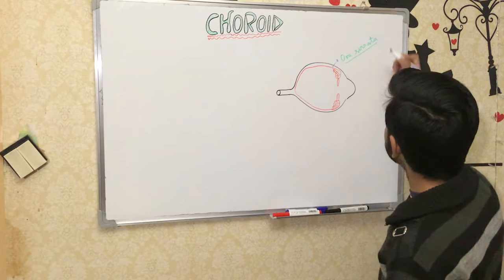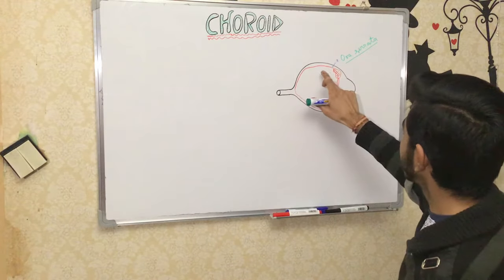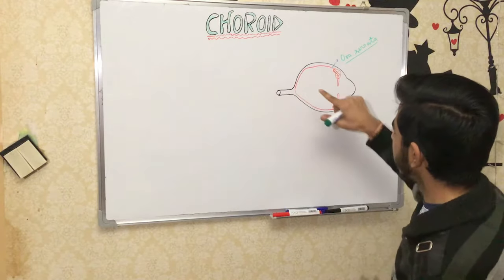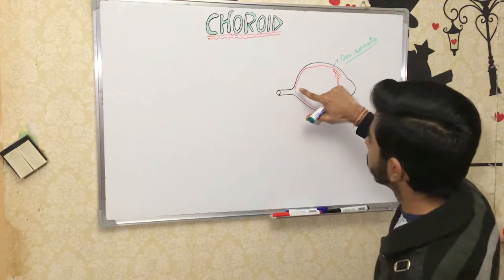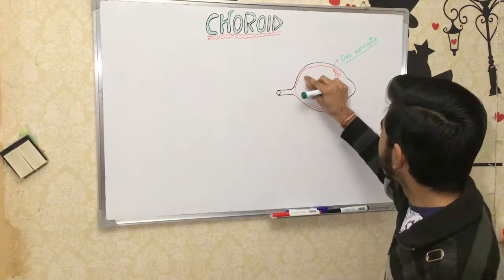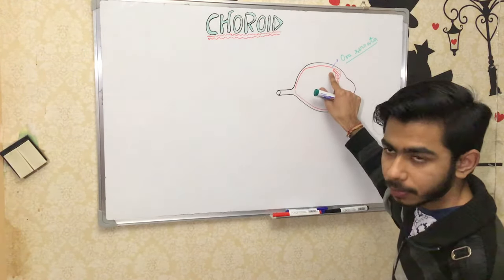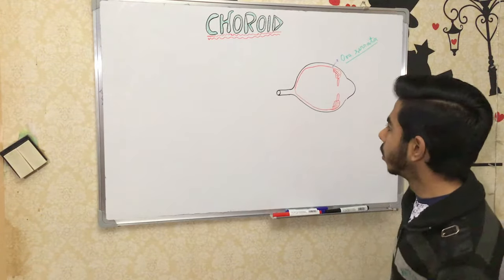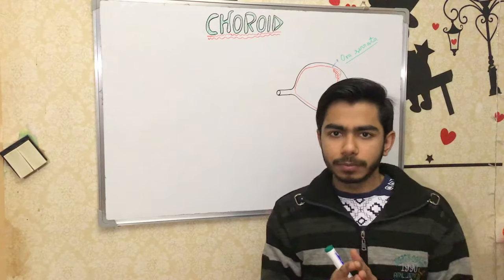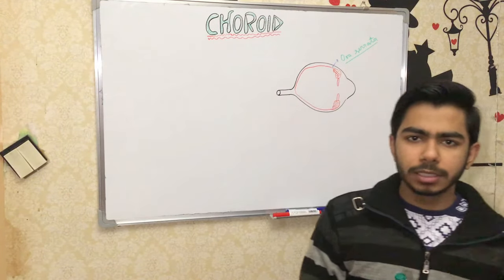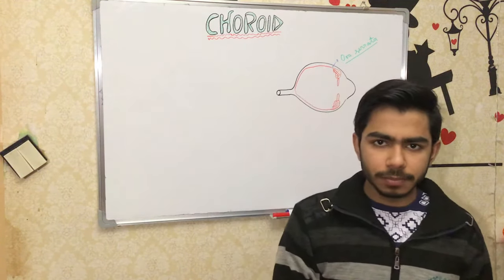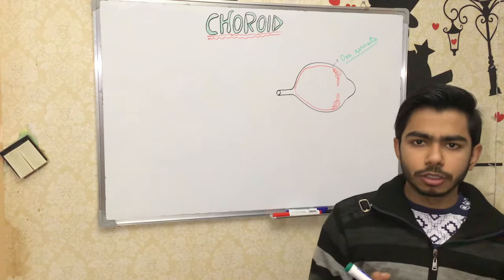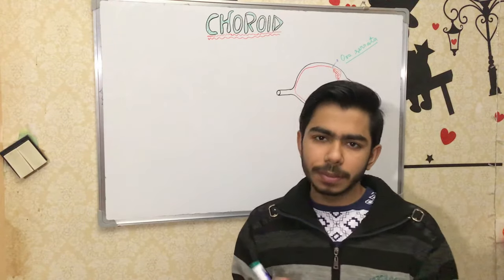So the junction between the choroid and the ciliary body is called the ora serrata. Now talking about the layers of the choroid — the choroid has three major layers: the first one is the supra choroidal lamina, the second one is the stroma of the choroid, and the third one is the basal lamina.